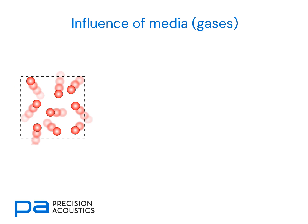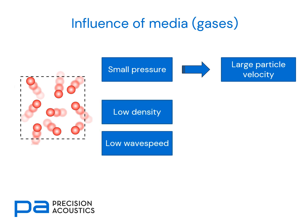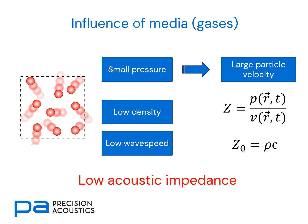Let's look at the influence of media, beginning with gases. Considering the specific impedance definition, in a gas a very small pressure can result in a very large particle velocity — particles have very little constraining them. The mean free path between particles is quite large, so a small applied pressure gives rise to a rapidly moving particle. However, the density of a gas is low, and because the distance between adjacent particles is also large, waves take quite some time to propagate, giving a low wave speed. Regardless of whether we look at specific or characteristic impedance, gases have low acoustic impedances.